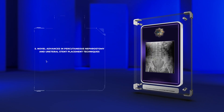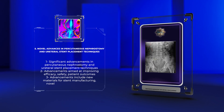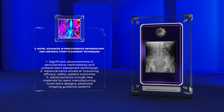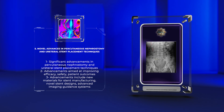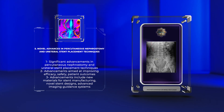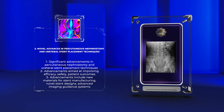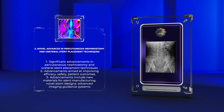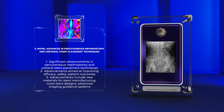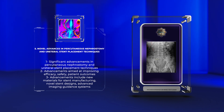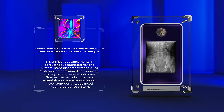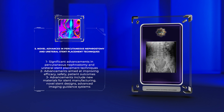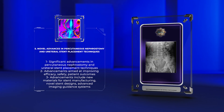Over the years, significant advancements have been made in percutaneous nephrostomy and ureteral stent placement techniques. These advancements aim to improve the efficacy, safety, and patient outcomes associated with these procedures. Some of the notable advancements include the development of new materials for stent manufacturing, novel stent designs, and the use of advanced imaging guidance systems such as three-dimensional (3D) fluoroscopy or augmented reality. These advancements offer exciting prospects for the future of interventional radiology and managing obstructive uropathy.